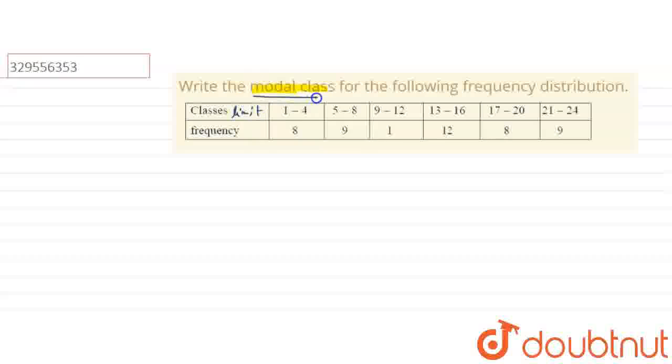We will say that it is the modal class. Modal class depends on frequency. Which frequency is the highest, that is the modal class. We will see that 8, 9, 1, 12, 8, 9. The modal class is actually 13 to 16.